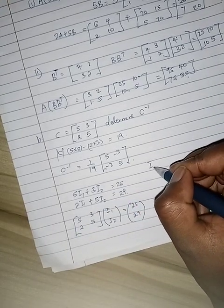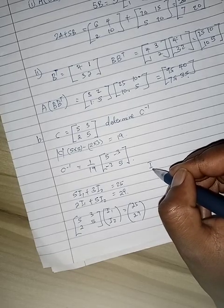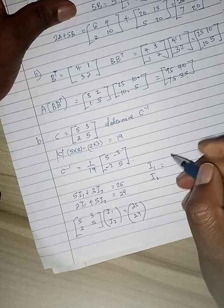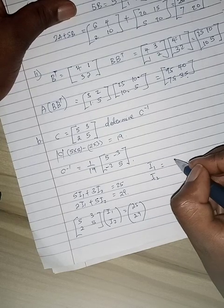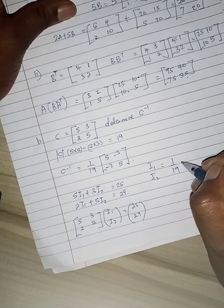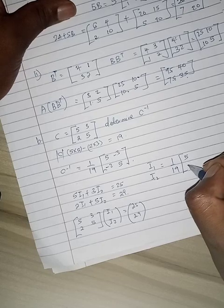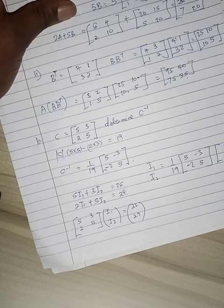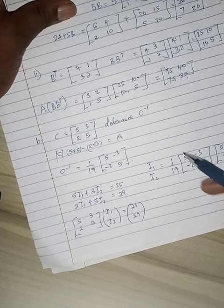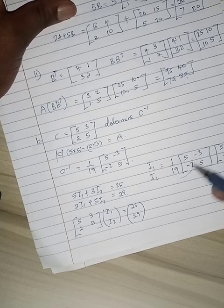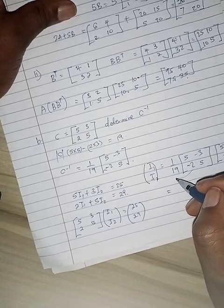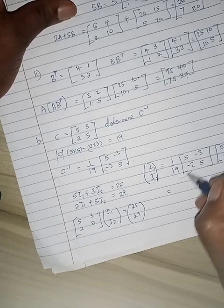So that now i1, i2 should be the same as 1 over 19, 5, negative 2, negative 3, 5. So when you are solving, I wouldn't recommend you to open this, the inverse, just leave it as that. So basically, if you do this, it's 1 over 19.